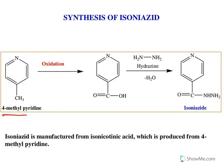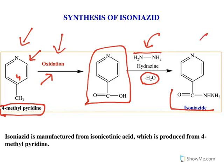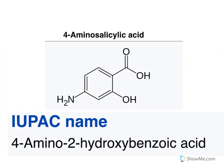The synthesis of isoniazid starts with 4-methylpyridine. This undergoes oxidation using oxidizing agents like KMnO₄, resulting in isonicotinic acid. When hydrazine is then used, a simple nucleophilic addition reaction with dehydration occurs, resulting in isoniazid. So the steps are: 4-methylpyridine → oxidation → isonicotinic acid → treatment with hydrazine → isoniazid.